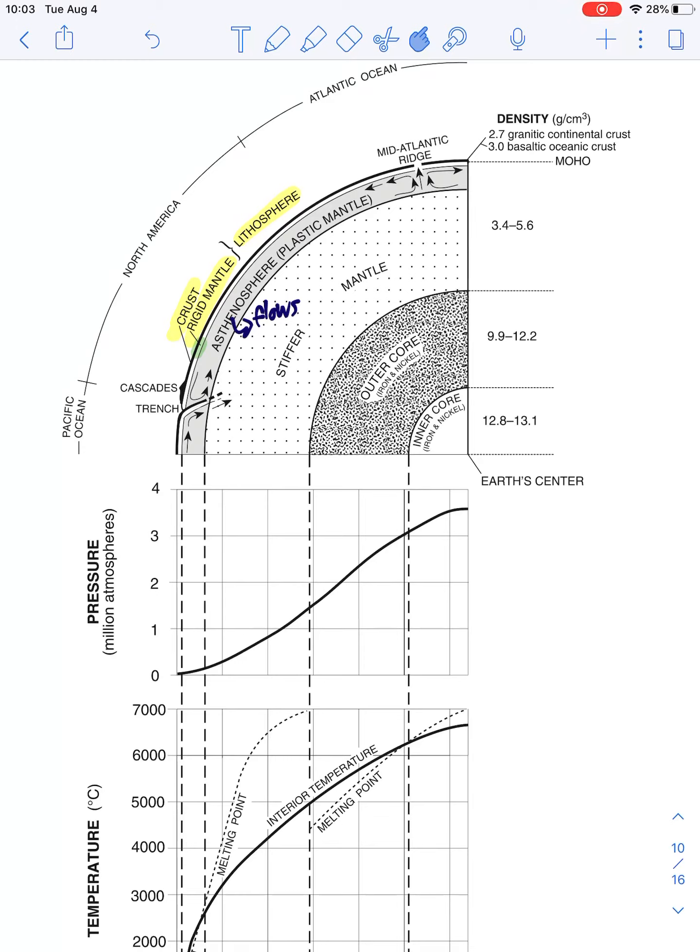Below that, we have the asthenosphere, which is the plastic mantle. Then we can get into the stiffer mantle and we keep going down and down and down.